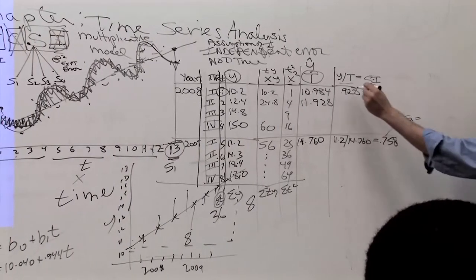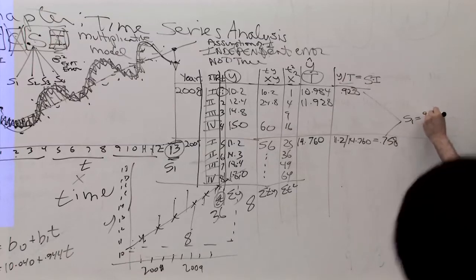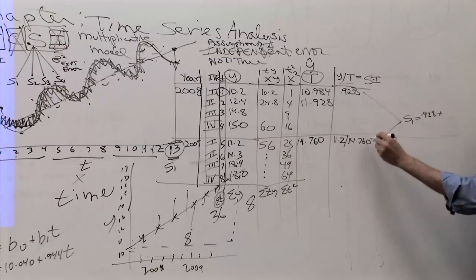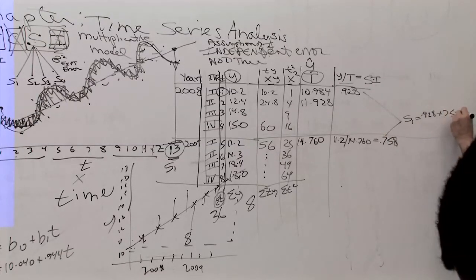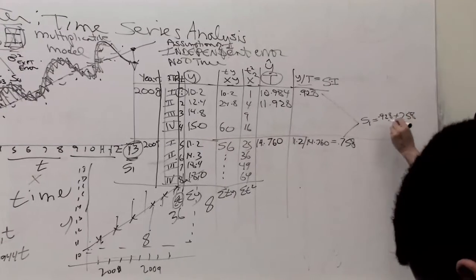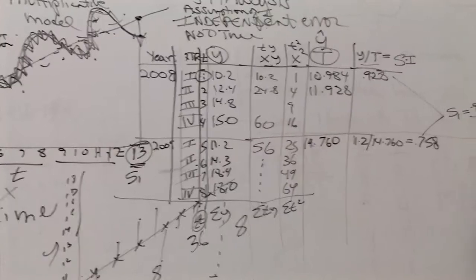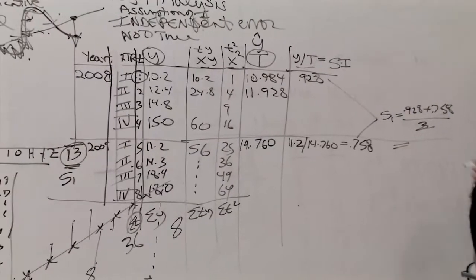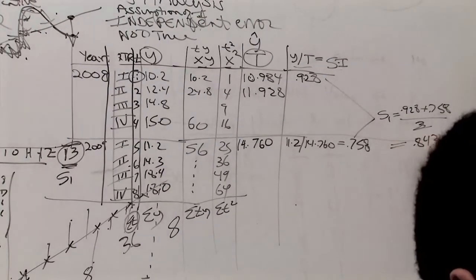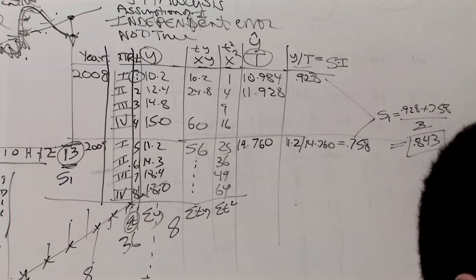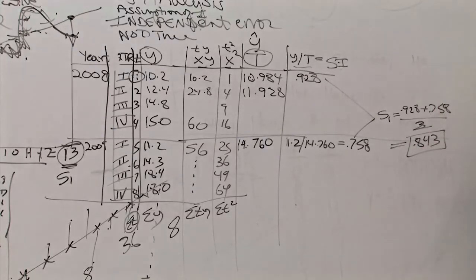So essentially the calculation is to take all the first quarters, which is 928 in this case, plus 758, and in this case there's only two of them, so you divide it by two. But if there's three of them divided by three, or five of them divided by five, what do you get for that calculation? 843. So what we're saying is that the first quarter of the year, at least on our limited historical data, that the first quarter of the year the data should be down by about 15 or 16 percent from what it should be according to the perfectly straight line.